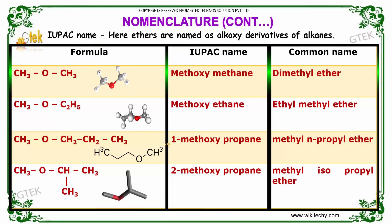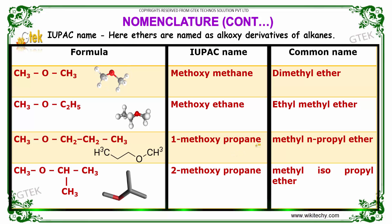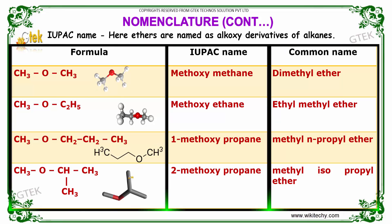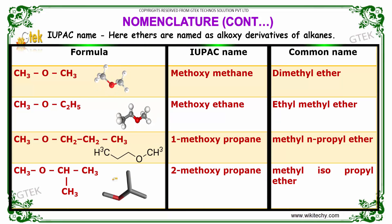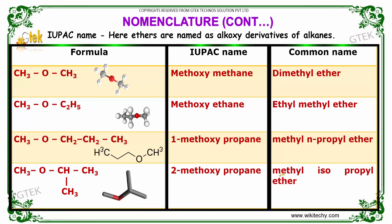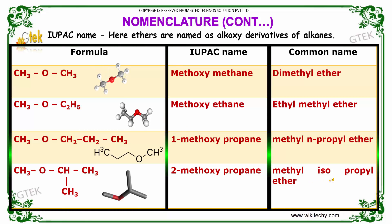For the compound CH3OCH2CH2CH3, its IUPAC name is 1-methoxy-propane, whereas its common name is methyl-n-propyl ether. For the formula CH3OCH(CH3)2, its IUPAC name is 2-methoxy-propane, whereas its common name is methyl-isopropyl ether.